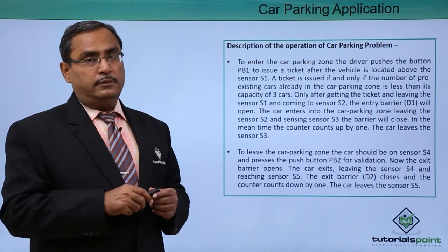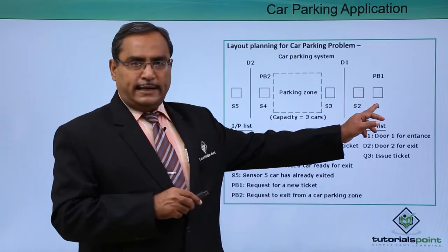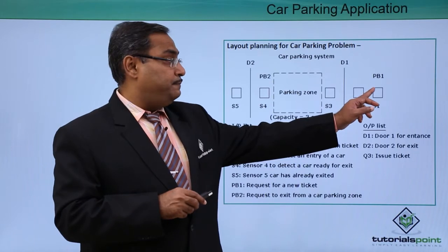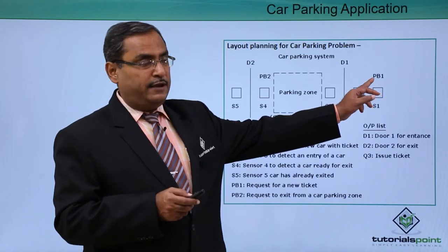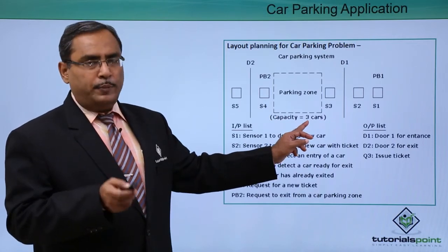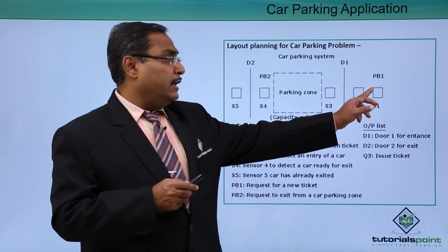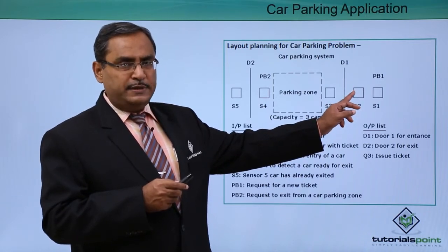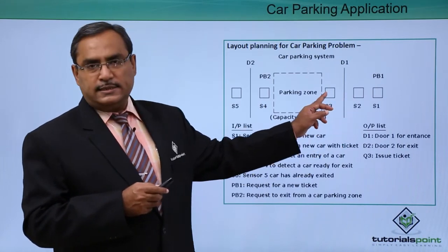That is the problem description. Looking at the diagram for better understanding: the car will be at S1, pressing PB1, then moving to S2. PB1 issues the ticket — the ticket is issued only if the parking zone has space. The capacity here is 3 cars. If the car has got the ticket, it moves to S2, and when it is on S2 with the ticket issued, entry barrier D1 will open and the car will come to sensor S3.